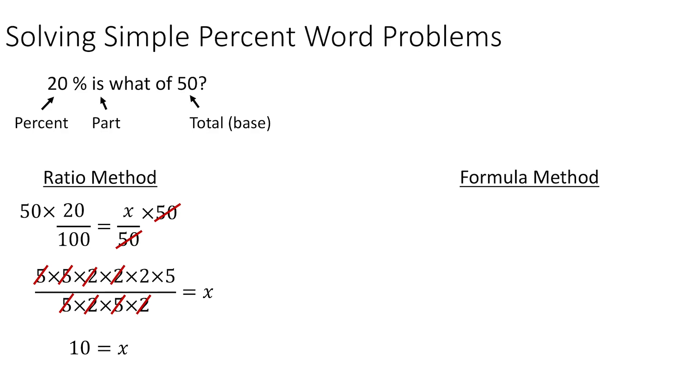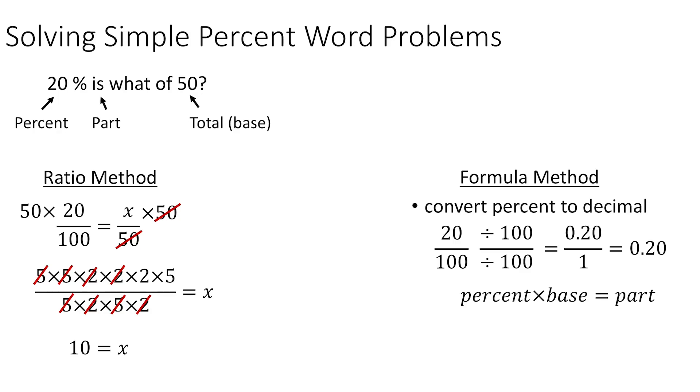Now using the formula method, our percentage is 20. So we start with 0.2 as our percent. So 0.2 times the base, which was given as 50 is equal to the part. So in that case, 0.2 times 50 is equal to 10.